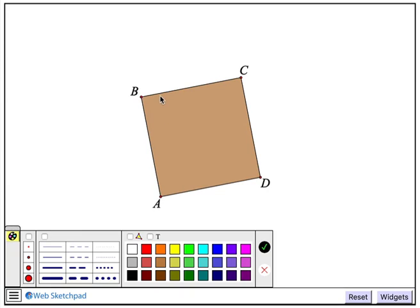I'd like to make its four vertices larger and color them blue. I'll tap the image of a large point, and I'll tap the blue swatch.